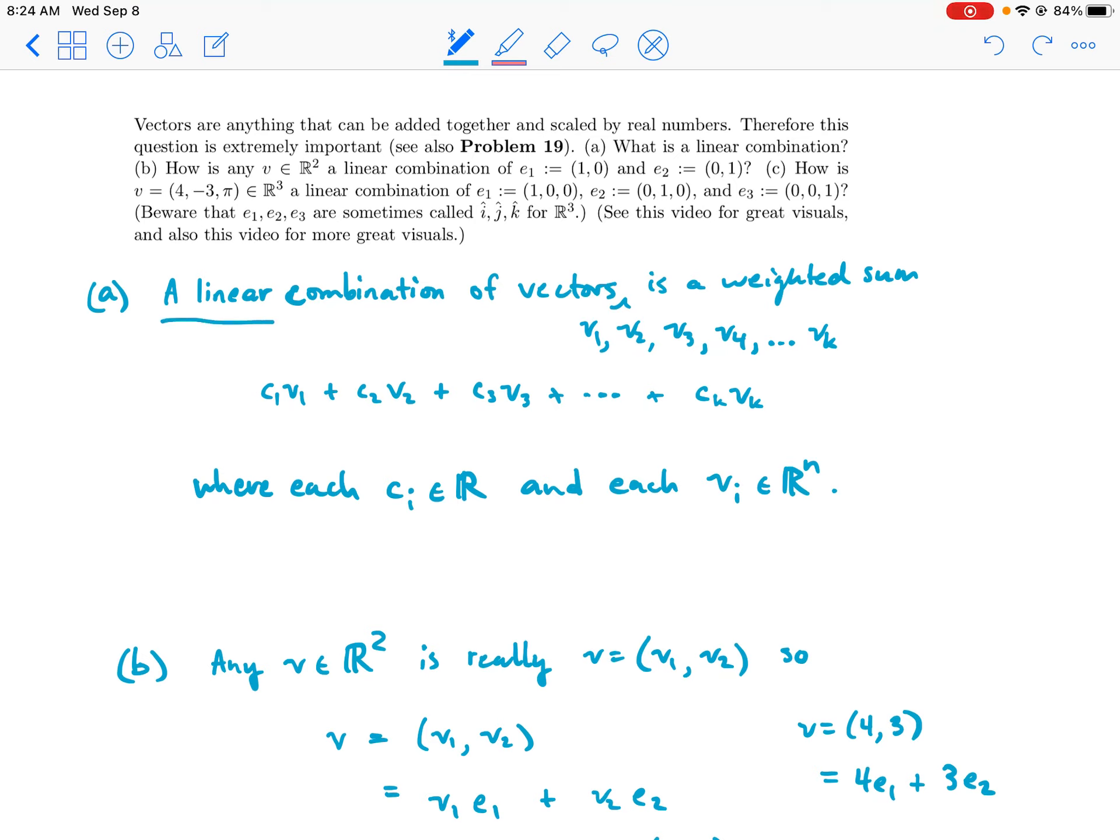Okay, so did I answer the question: what is a linear combination? A linear combination of vectors is a weighted sum like that, where each coefficient or scalar is a real number and each v_i is a vector. And so, you know, the result when we add up all these things, we're going to get a vector.